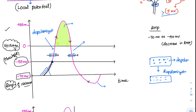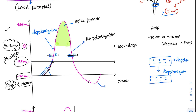The downstroke represents repolarization. Zero millivolts is called the ISO voltage. Everything above the ISO voltage is called the spike potential — the highlighted green area in the diagram is the spike potential, representing everything above 0 mV during the action potential.